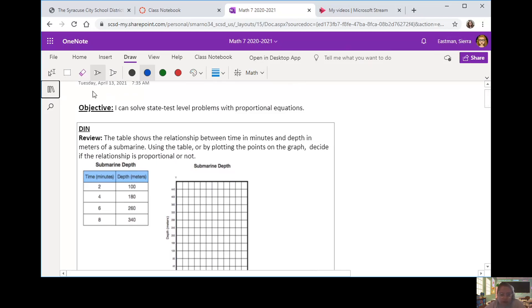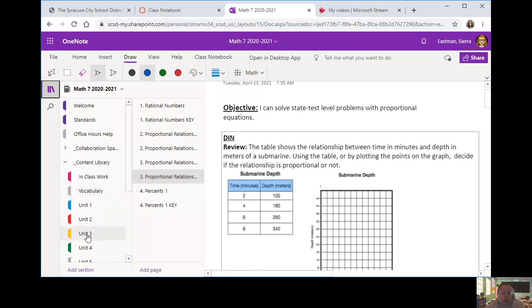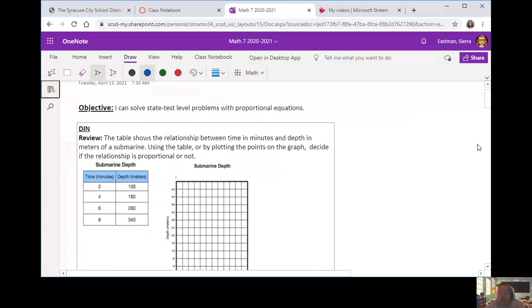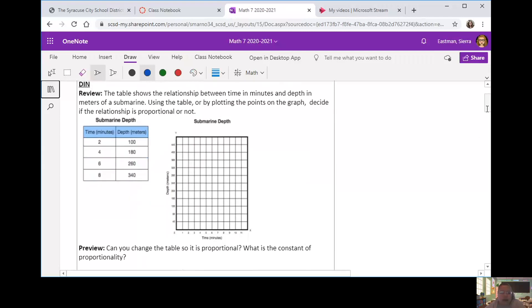And this is review from our original unit three that we did this year. So take a minute, take a look at your DIN review and preview question. There's a table, there's a graph if you would like to graph it, and we want to decide whether that relationship is proportional or not. And then, in the preview question, you're going to take it a little bit further.